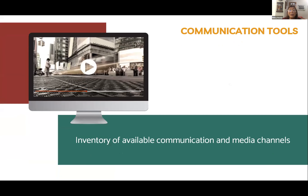An important section of the implementation chapter is communication tools — a listing and inventory of all available communication and media channels the university has. What's important here is a matrix: if this is the website, who's in control, who has access? This is an inventory of communication media and channels along with who the responsible people are, so that information can be shared with them.